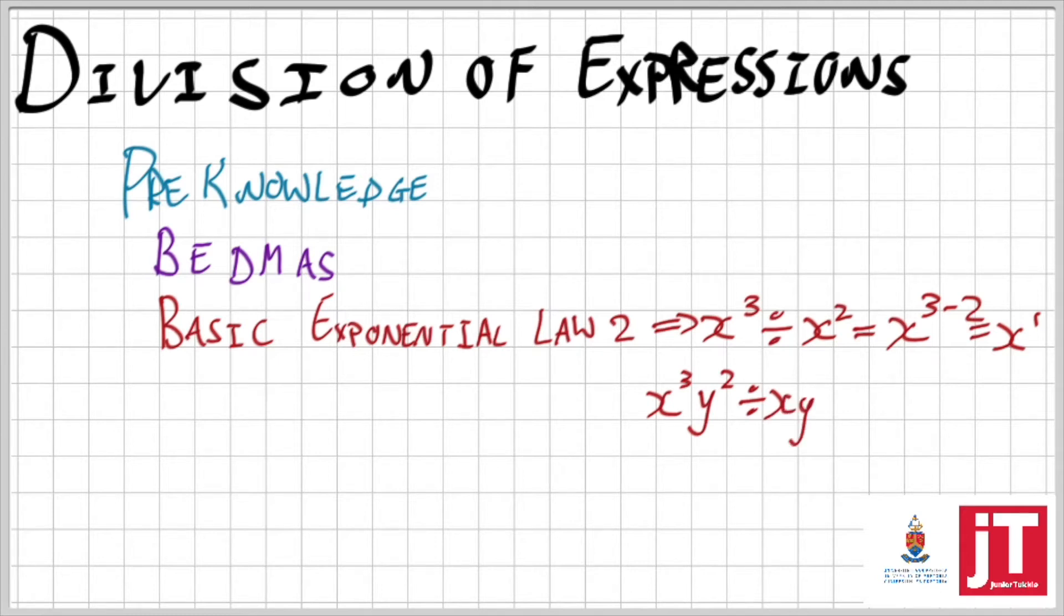What if I give you x to the 3, y to the 2 divided by xy? Well then I just subtract the corresponding x's and the corresponding y's exponents, so that leaves me with x to the 2 times by y.